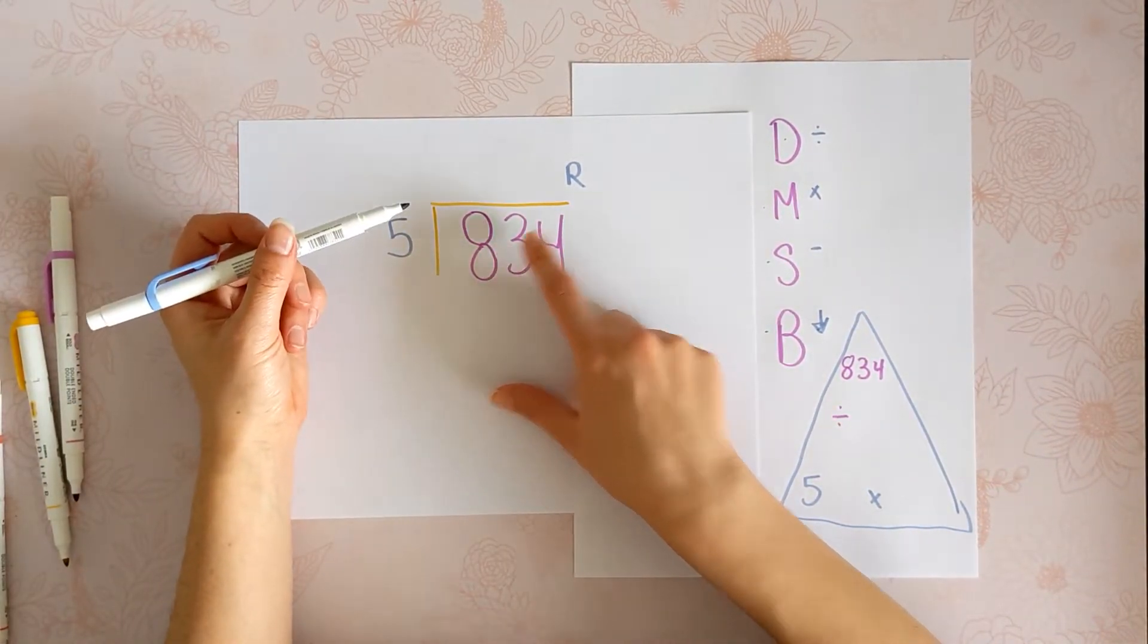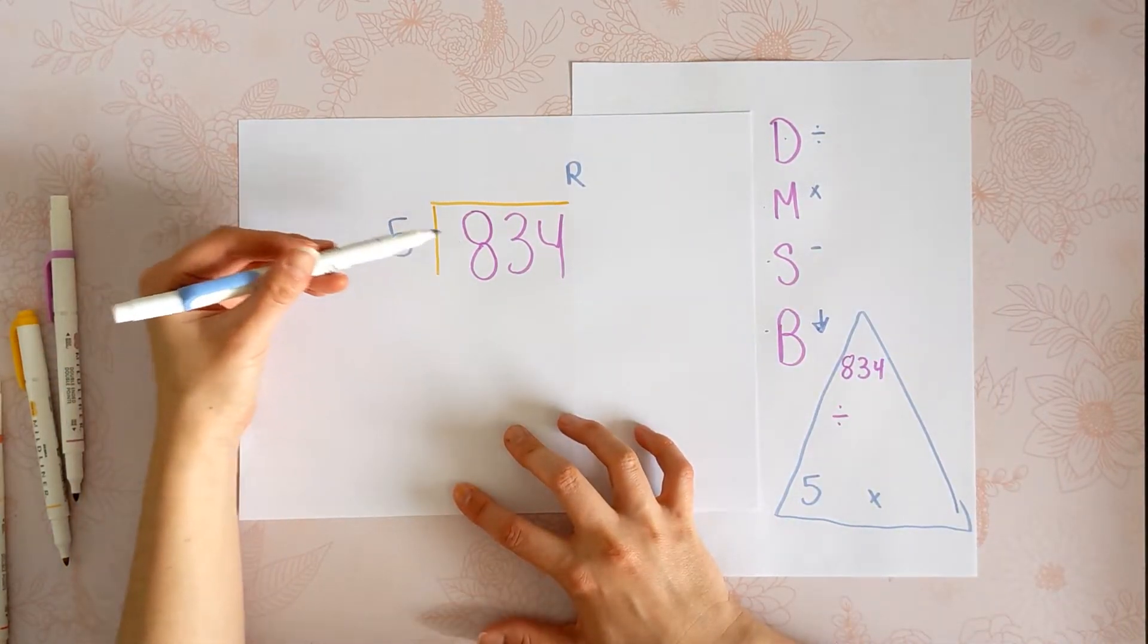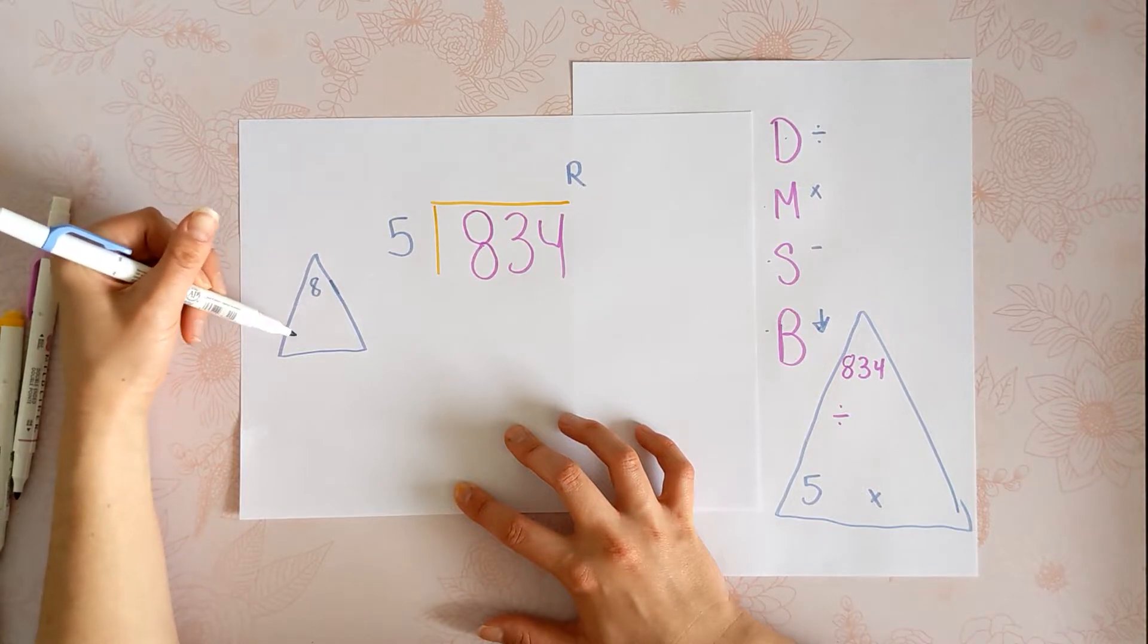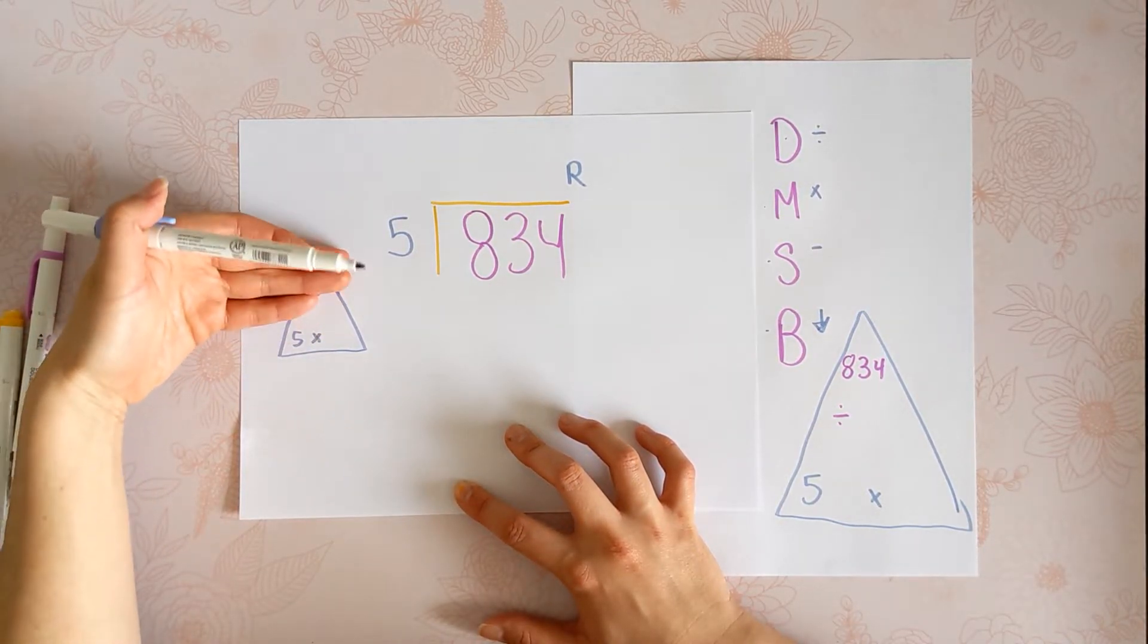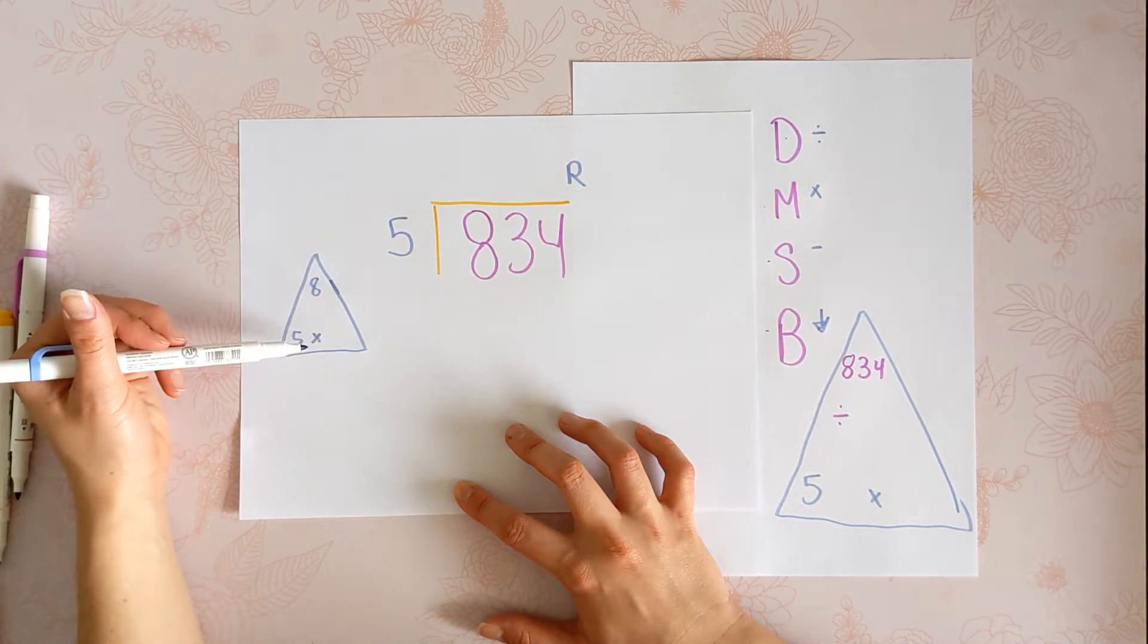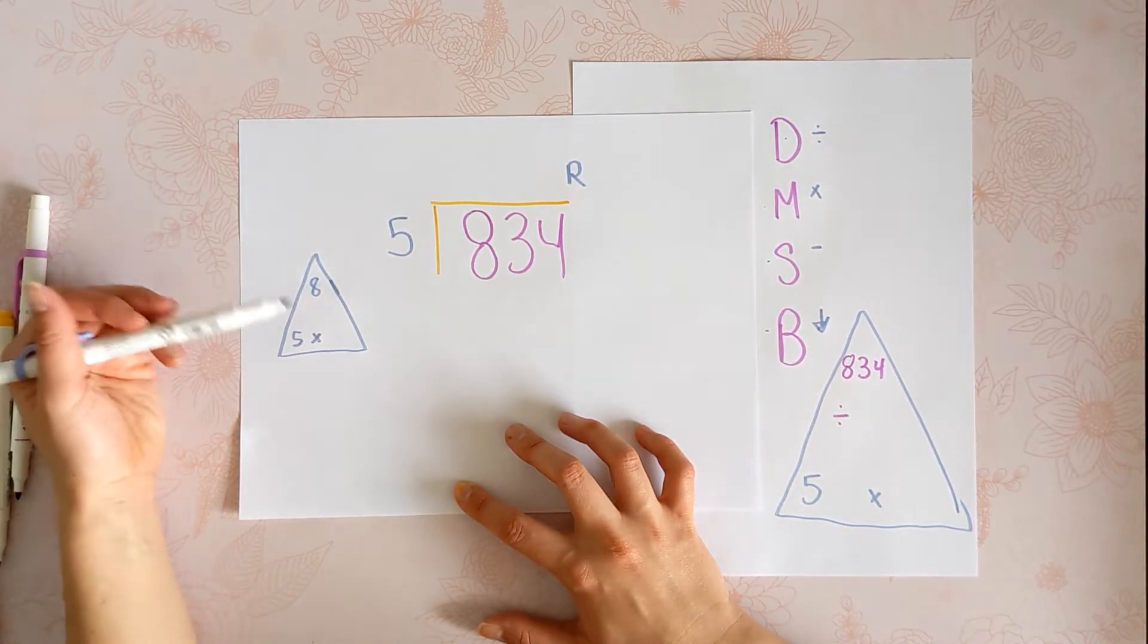We're going to start with our 8 and we're going to divide. We're going to do 8 divided by 5. In other words, we're just saying how many 5s can fit into 8, or 5 times what will get us close to 8. In this case, it's just 1, because if you do 5 times 2, you're going to get to 10 and we can't go over.